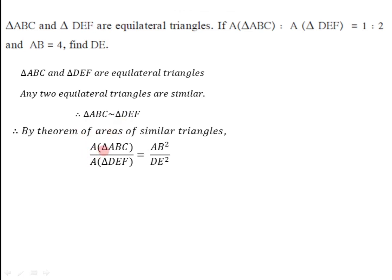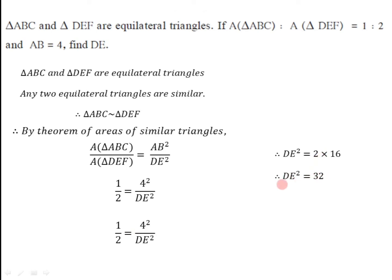By the theorem, area of △ABC / area of △DEF = AB²/DE². The ratio of areas is 1:2, so 1/2 = 4²/DE². Cross-multiplying gives DE² = 16 × 2 = 32. Taking the square root, DE = √32 = √(16 × 2) = 4√2. So the length of segment DE is 4√2.